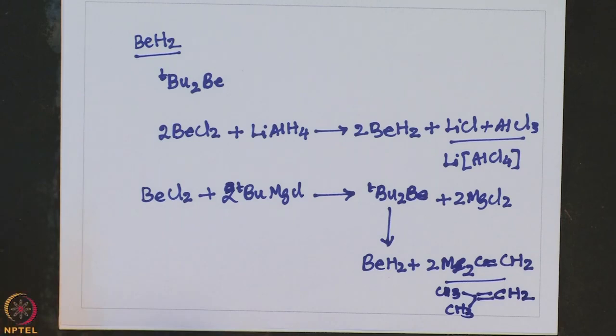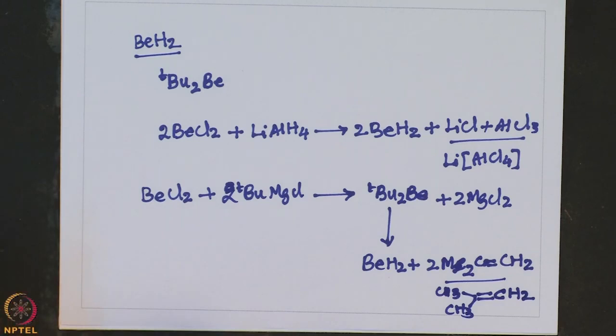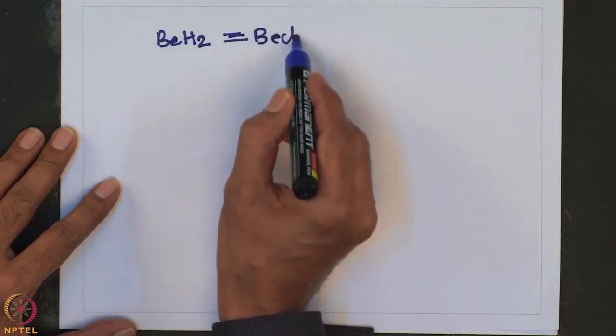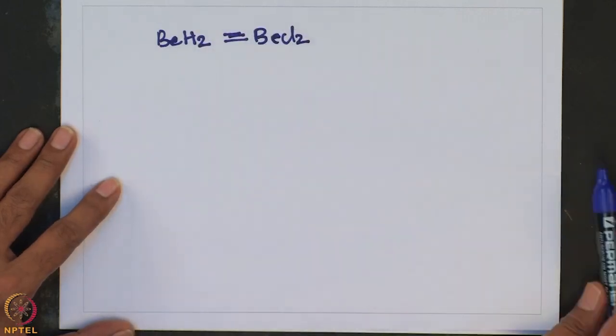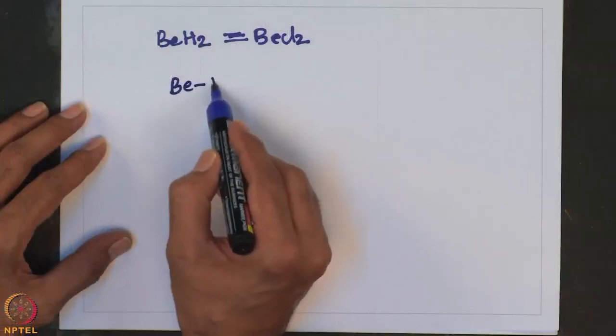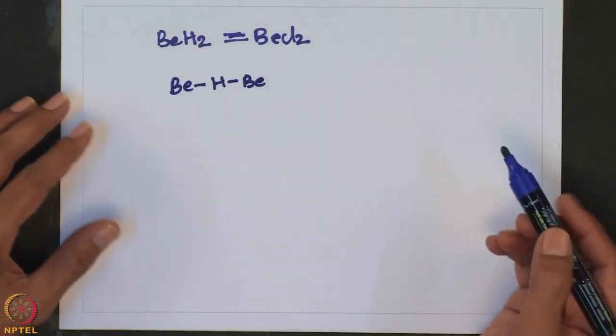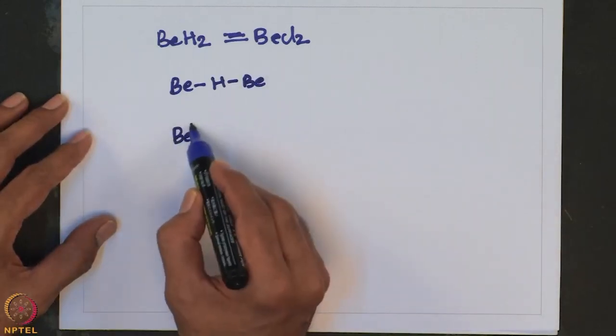Beryllium hydride structure is very similar to the structure of BeCl2. In both cases, the beryllium species — whether beryllium hydride or beryllium chloride — acts as both Lewis acid and Lewis base. As a result, they form adducts with Be-H-Be bridging and associate to form a one-dimensional chain.